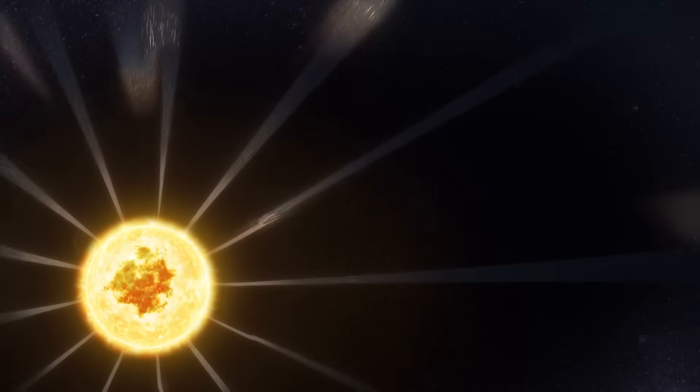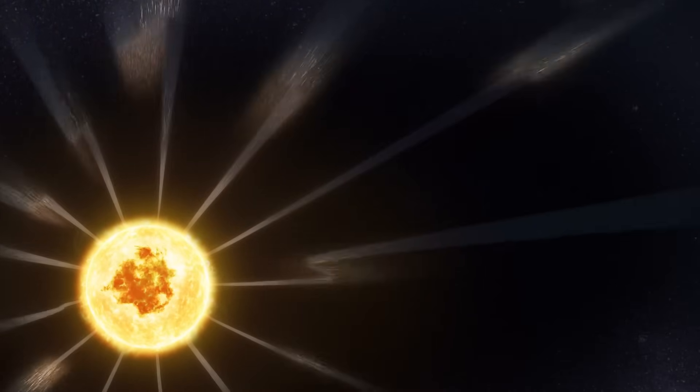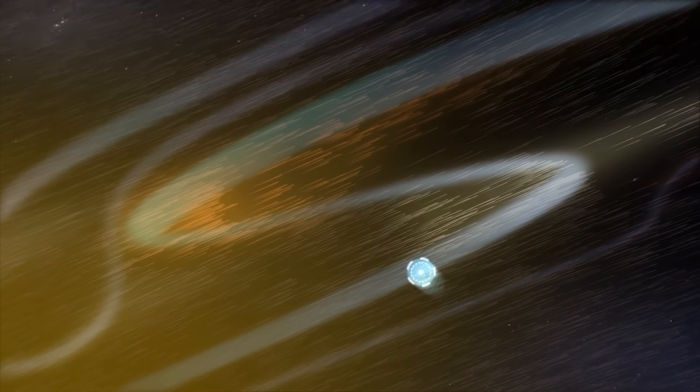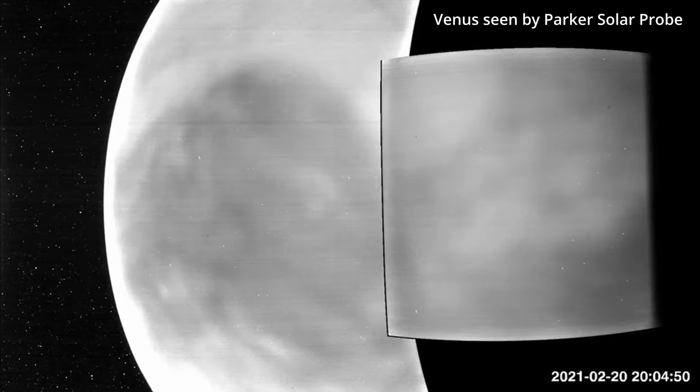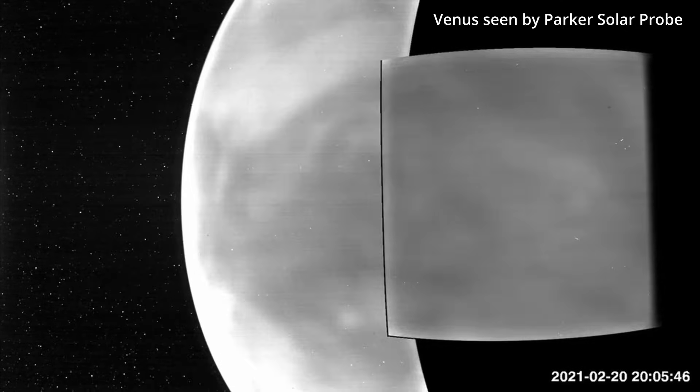Launched in August 2018, the Parker Solar Probe was designed to study the sun's corona and the origins of the solar wind. To achieve its close encounters, the spacecraft employed a series of seven Venus gravity assist maneuvers to gradually decrease its orbital perihelion. The final Venus flyby occurred on November 6, 2024, setting the stage for the December 24 close approach.